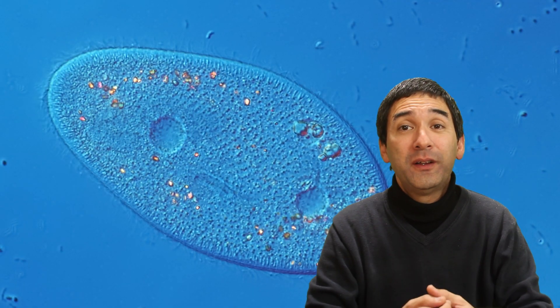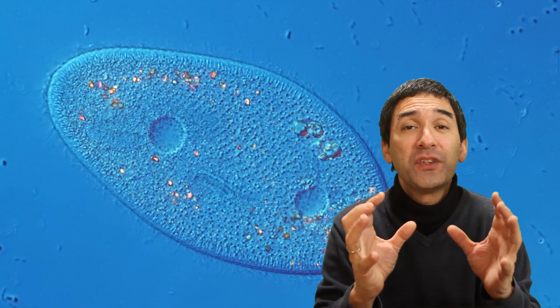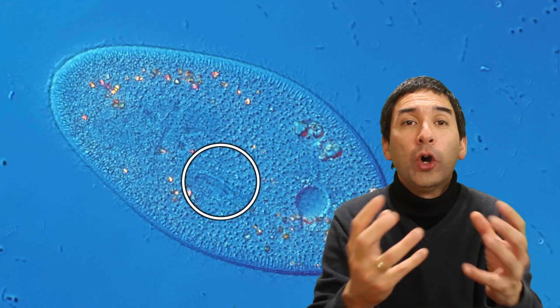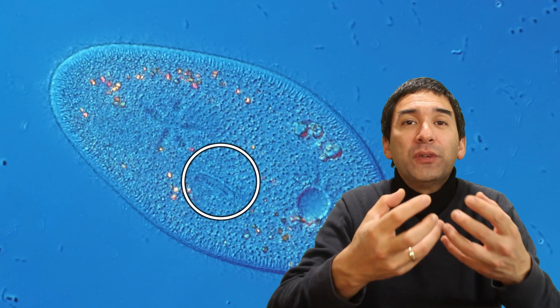Now, once the bacteria are close enough, the ciliate uses a special part of their cell called the cytostome to gobble up the bacteria and to bring them inside.